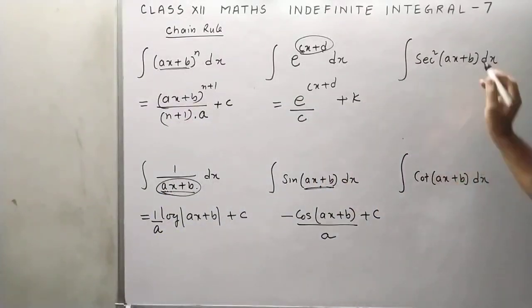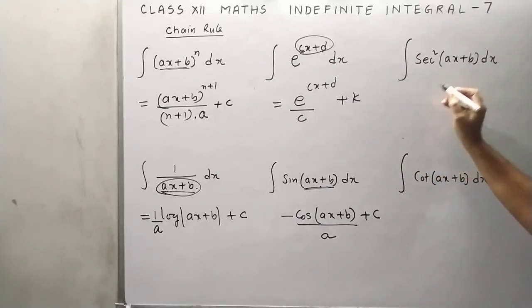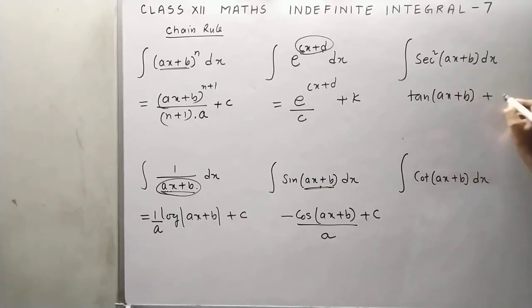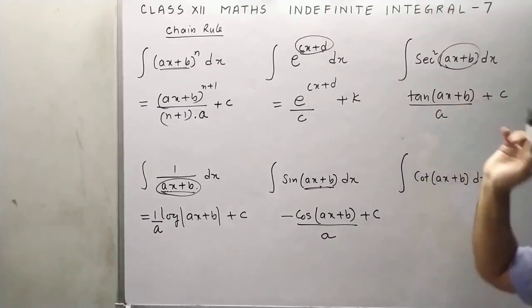Now next one is sec square. We have formula for sec square: tan x. So the answer will be this, but derivative of this is a, again divide by a.